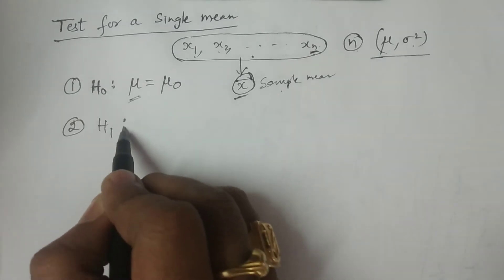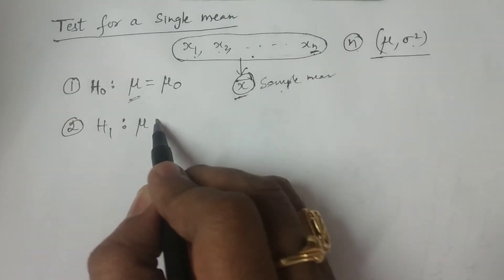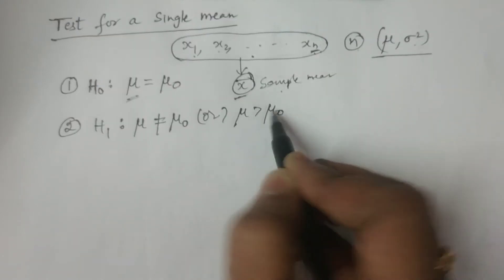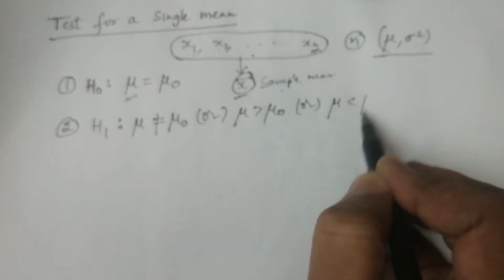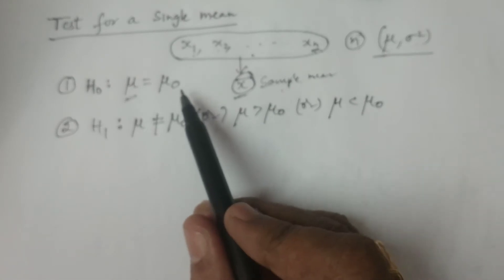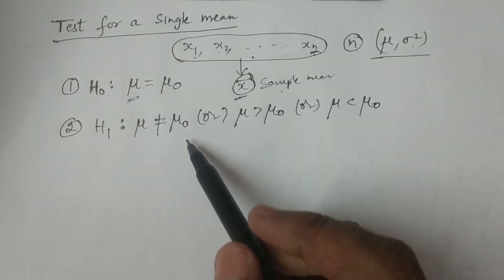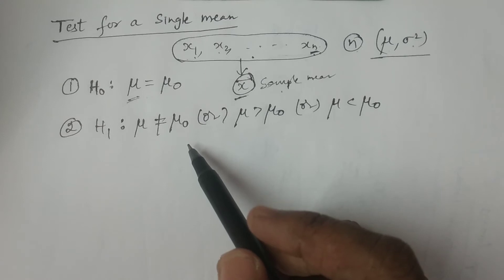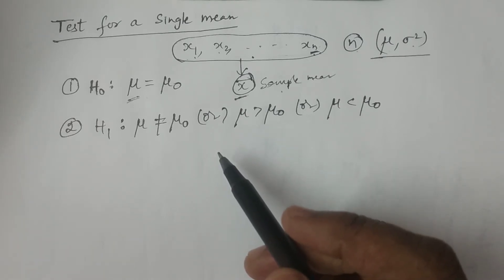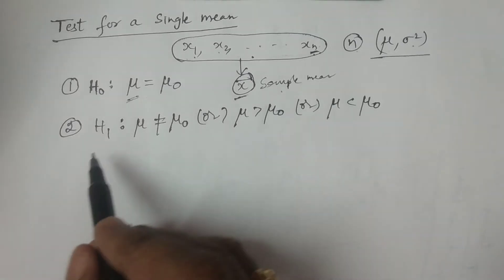The second point is the alternative hypothesis. We can formulate the alternative hypothesis as: mu not equal to mu naught, or mu greater than mu naught, or mu less than mu naught. These are the three kinds of alternative hypothesis. The meaning of this is that the sample mean is not drawn from the population — or that there is a significant difference between the sample mean and the population mean.